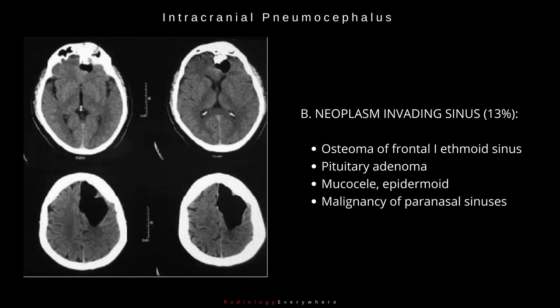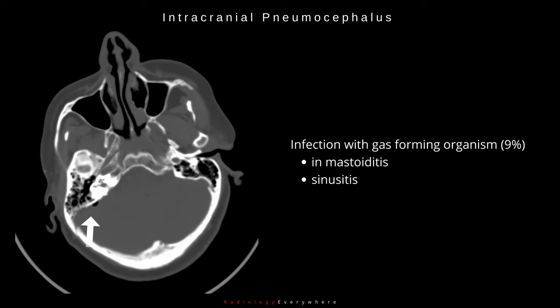The second group involves neoplasms invading the sinus. Tumors can be osteoma of the frontal or ethmoid sinus, pituitary adenoma, mucosal, epidermoid, or malignancy of the paranasal sinuses. The third group involves gas-forming infections like mastoiditis or sinusitis.